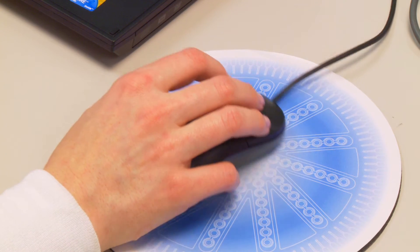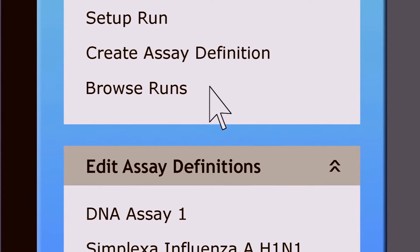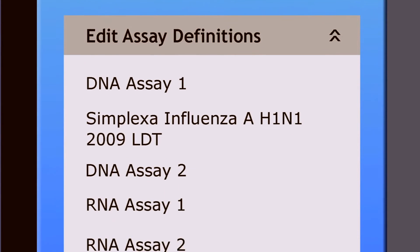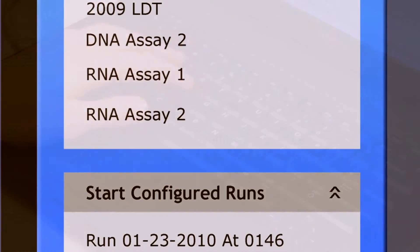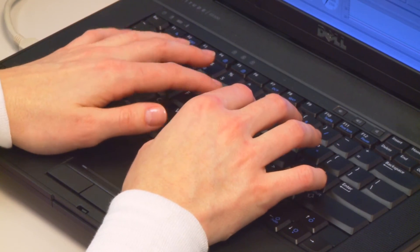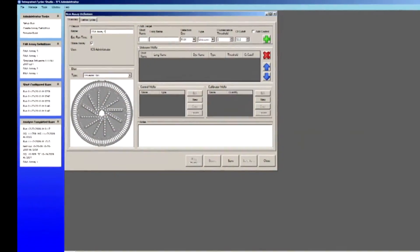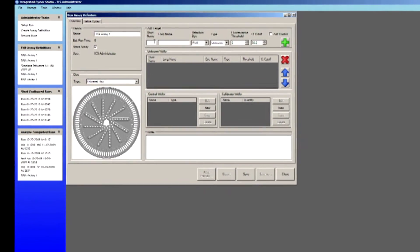LIS compatibility and bidirectional connectivity allows for seamless integration into your lab. The Quick Pick menu items provide quick access to commonly used features with a single mouse click, allowing you to easily create assay definitions, test names and input target, control and calibrator information.